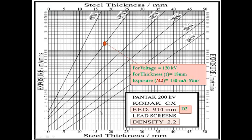From the expiry chart, if we select a voltage of 120 kV and the thickness is 18 mm, and this chart corresponds to an FFD of D2 = 914 mm, we get a film density of 2.2.